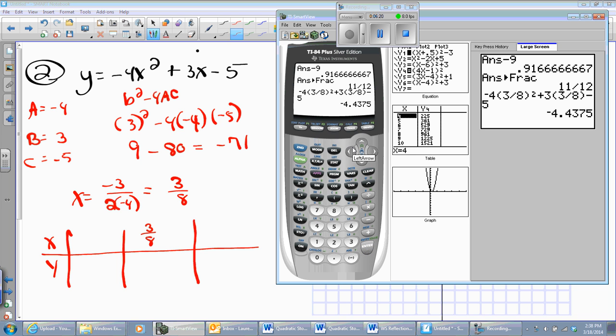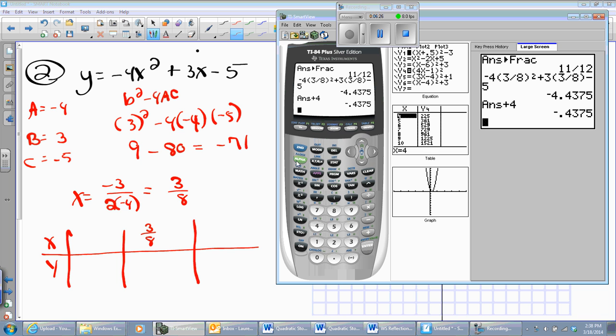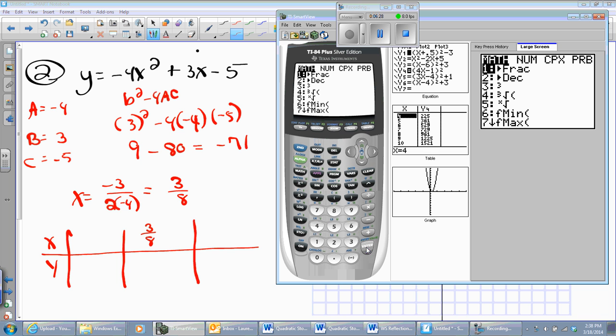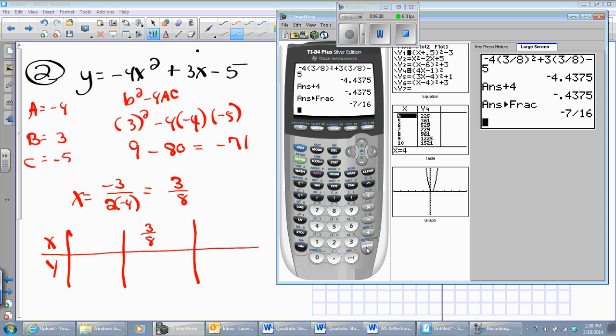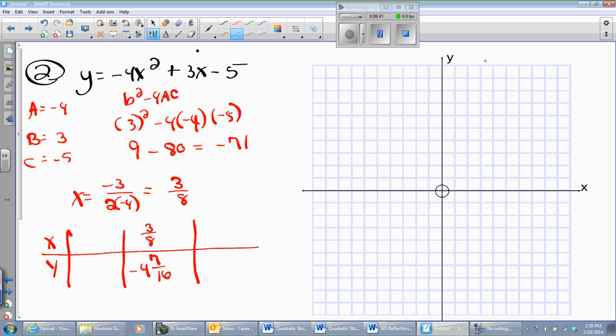And there we go. Now again, I don't know what that number is. I'm not going to subtract off the whole number because it's a negative. I'm going to add 4, and then I'm going to hit math, frac. And there we go, 7/16. So this looks like it's going to be negative 4 and 7/16.